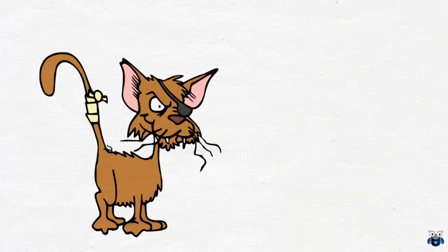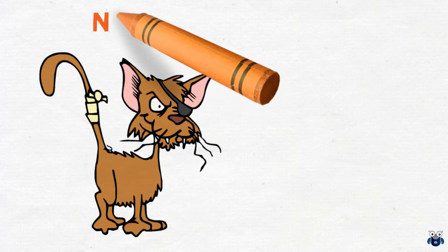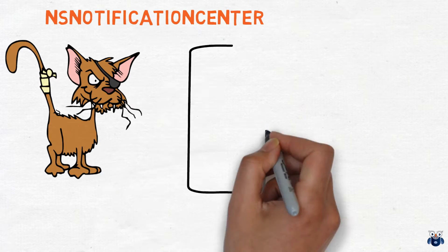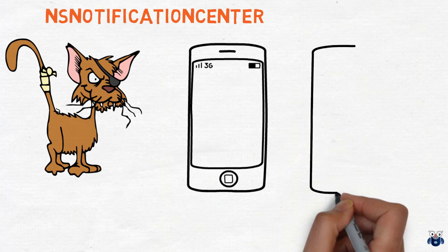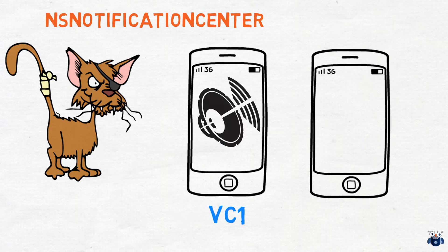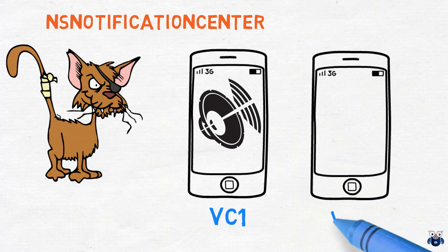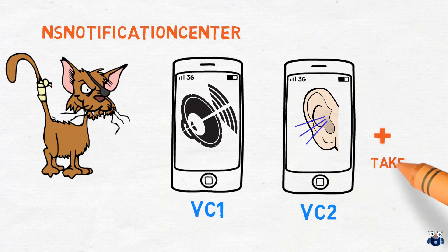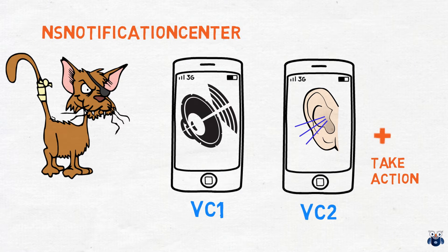In this video we will look at Swift's NSNotificationCenter class. We will create two simple ViewController objects. One of these, the subject, will publish an event. The other ViewController will exhibit interest in knowing when the event is published and will also take certain action once it is notified about the event publication.